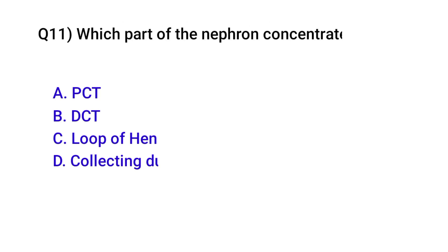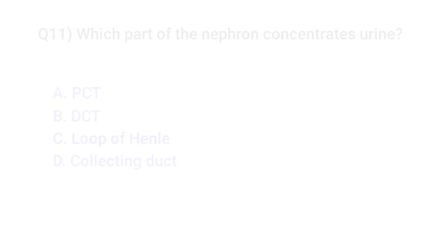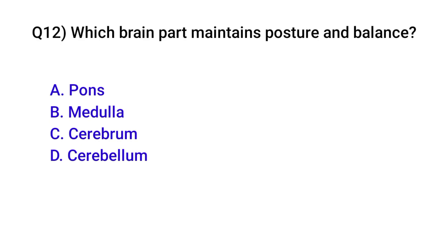Question number eleven: Which part of the nephron concentrates urine? Correct option is C: Loop of Henle. Question number twelve: Which brain part maintains posture and balance? Correct option is D: Cerebellum.